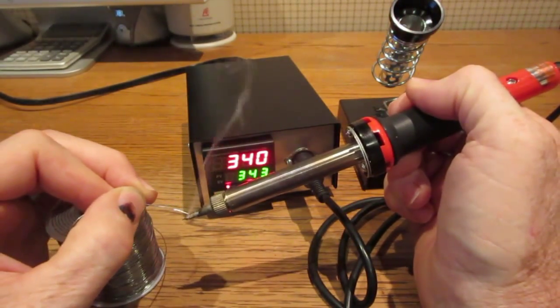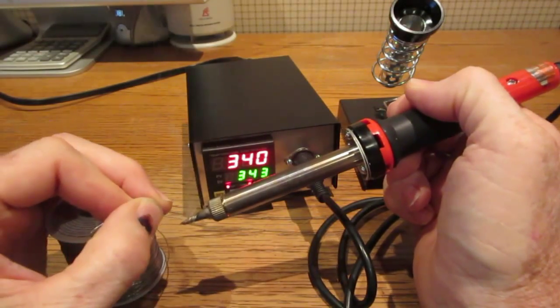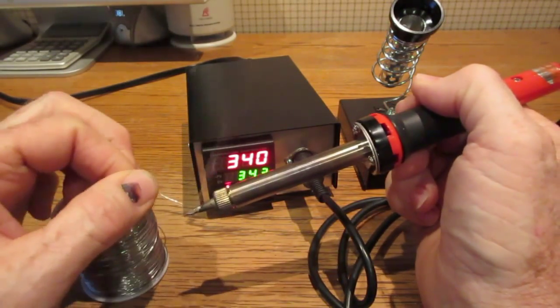The soldering iron is modified by inserting a thermocouple inside the unit near the rear opening of the heating element.